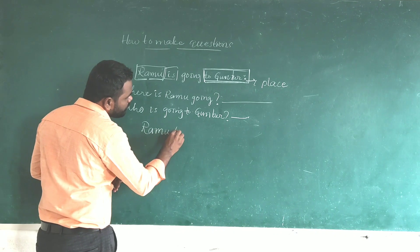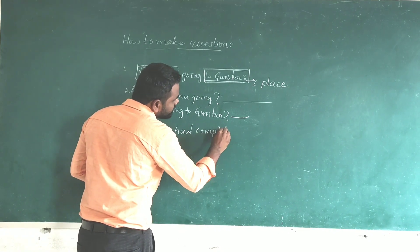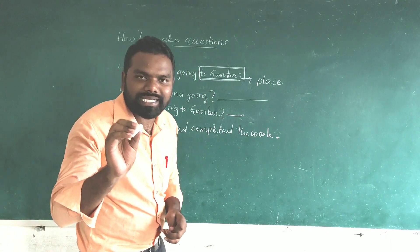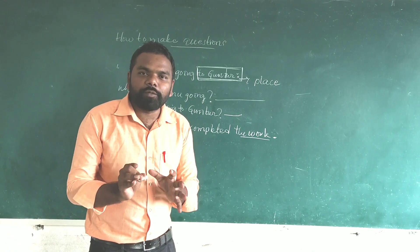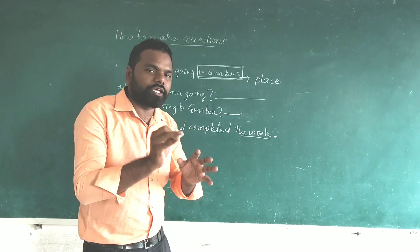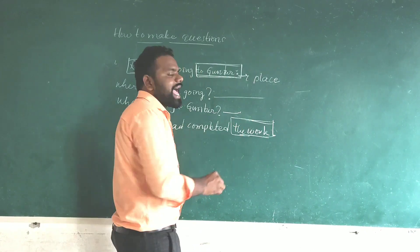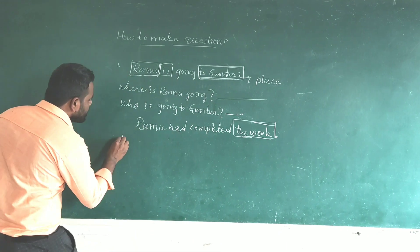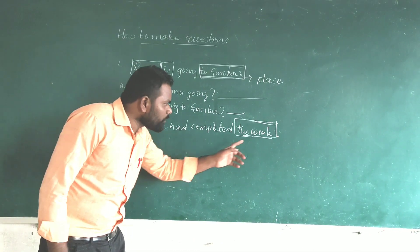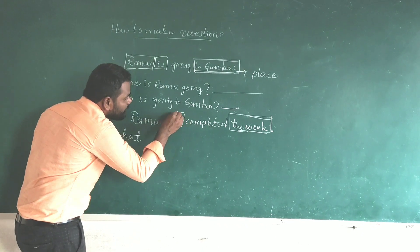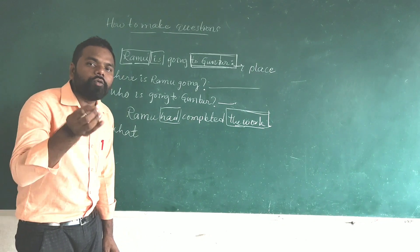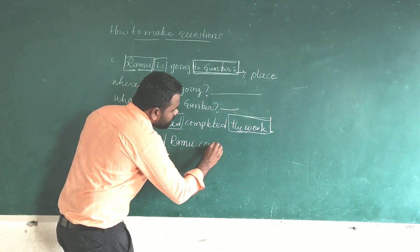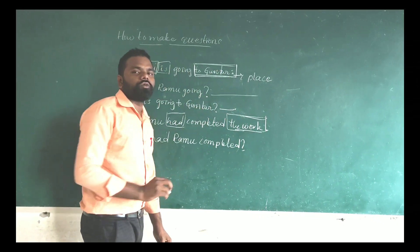Let me tell you one more sentence. Ramu has completed the work. Now I am going to underline 'the work.' The underlined part — to get it as an answer, I need to make the question. 'The work' indicates an action, or thing, or result. For that case, we use 'what.' What is the helping verb in the sentence? If you find very clearly, 'had' is the helping verb. Now we make: What had Ramu completed? This is how to make the WH question using the helping verb.